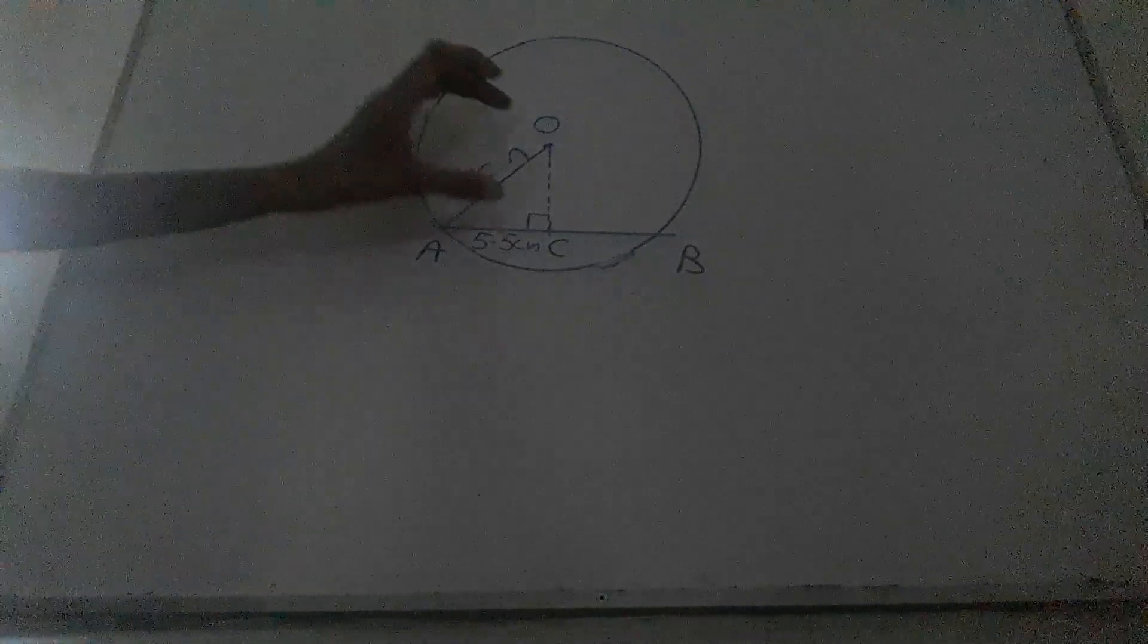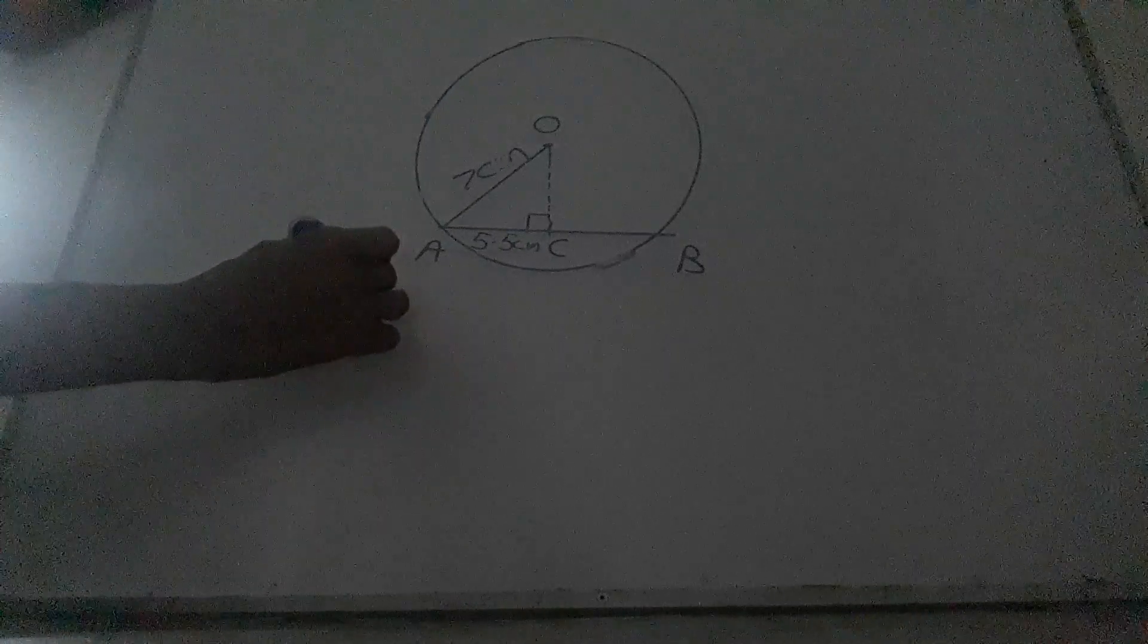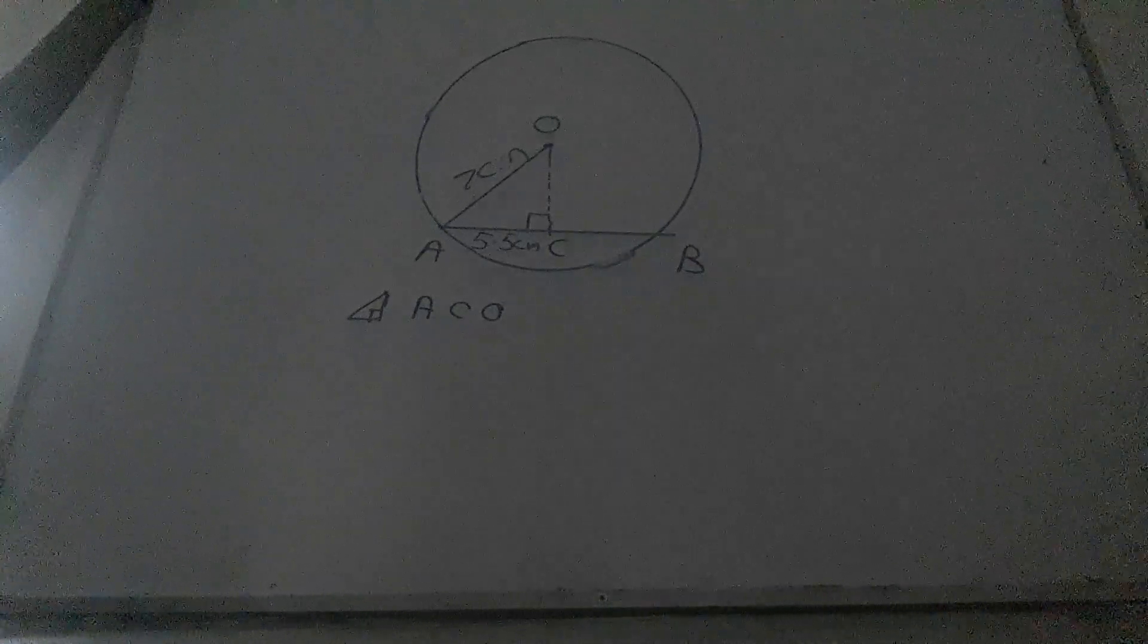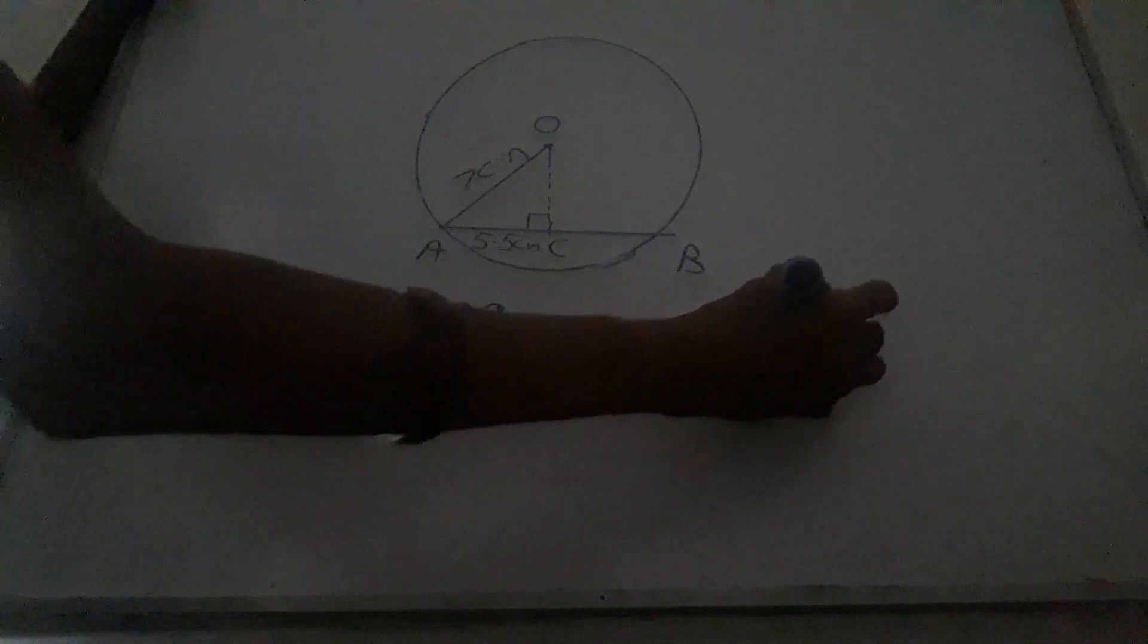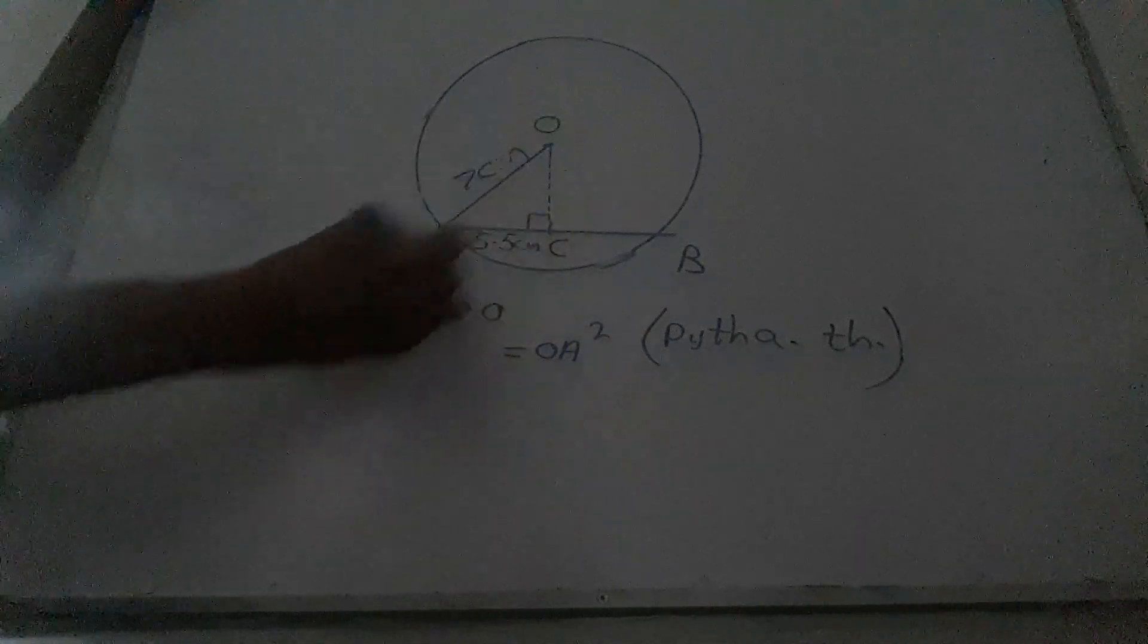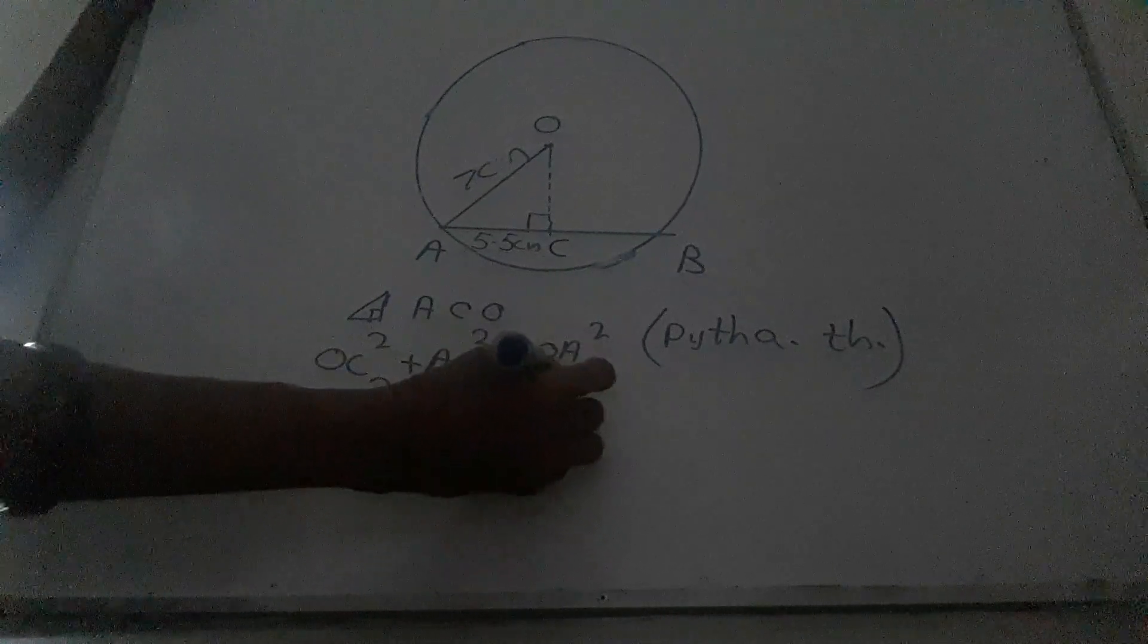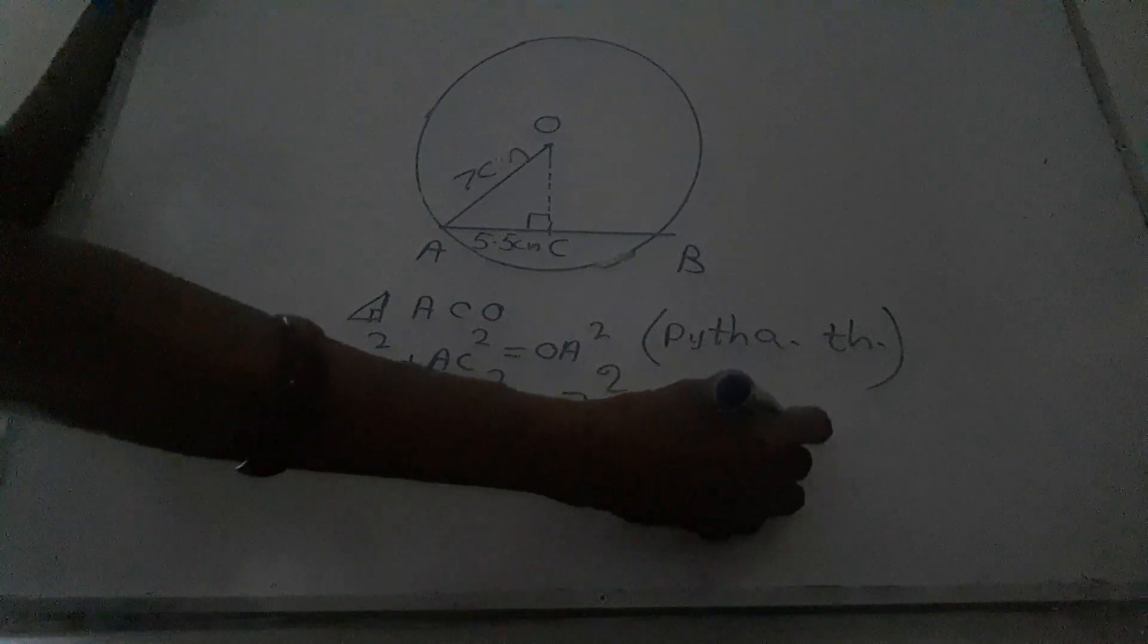Now we are going to find the length of OC. We need the Pythagoras theorem to the right triangle ACO. We use the Pythagoras theorem. OA squared is equal OC squared plus AC squared. OC squared plus AC squared is 5.5 squared. This is equal 7 squared. OC squared is equal 7 squared subtract 5.5 squared.